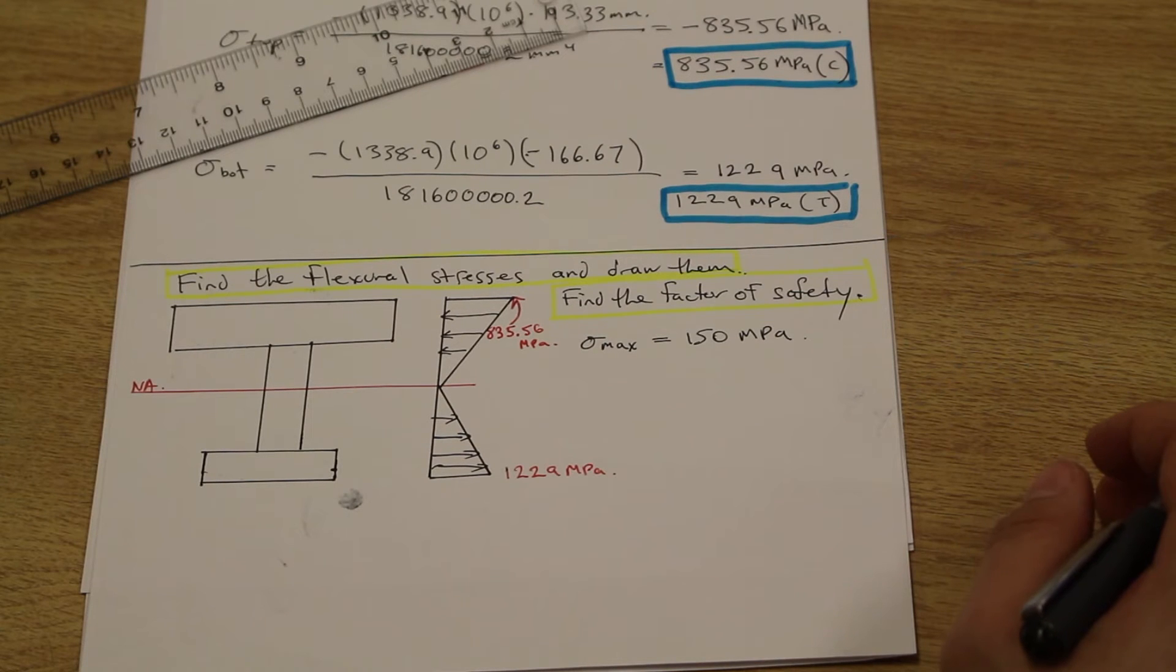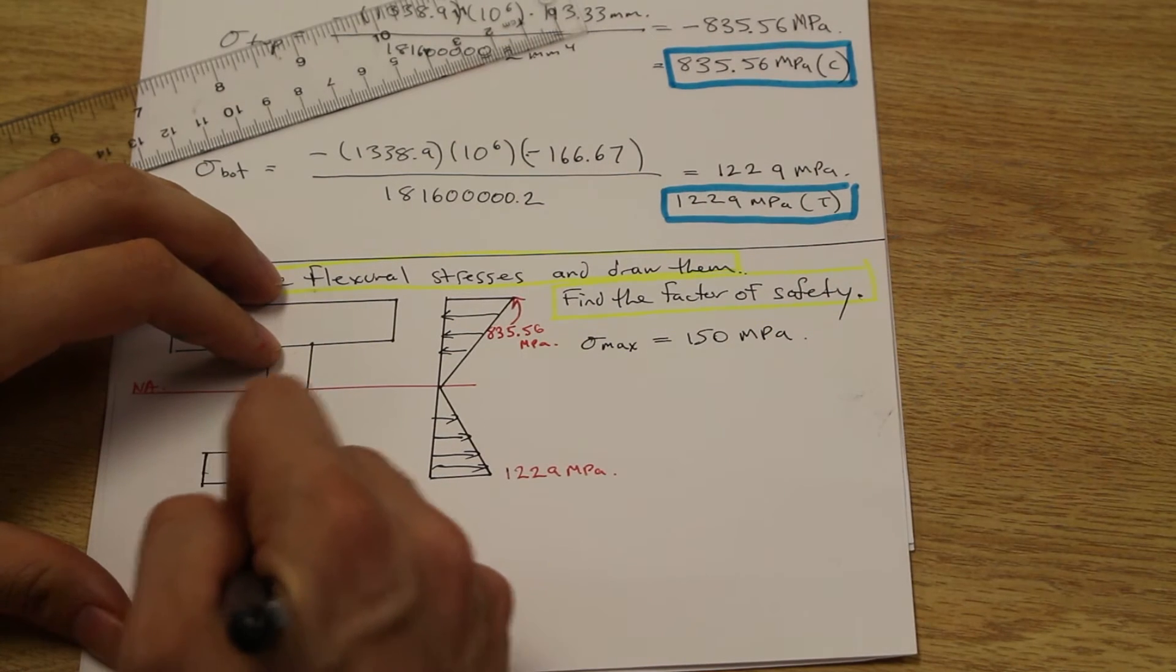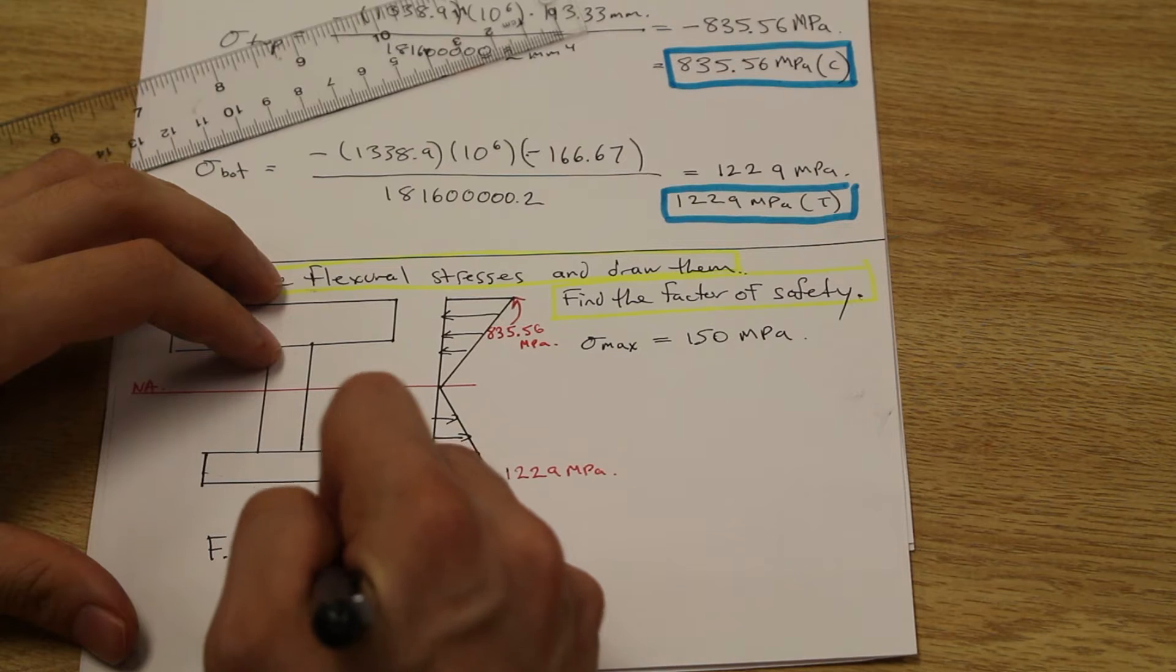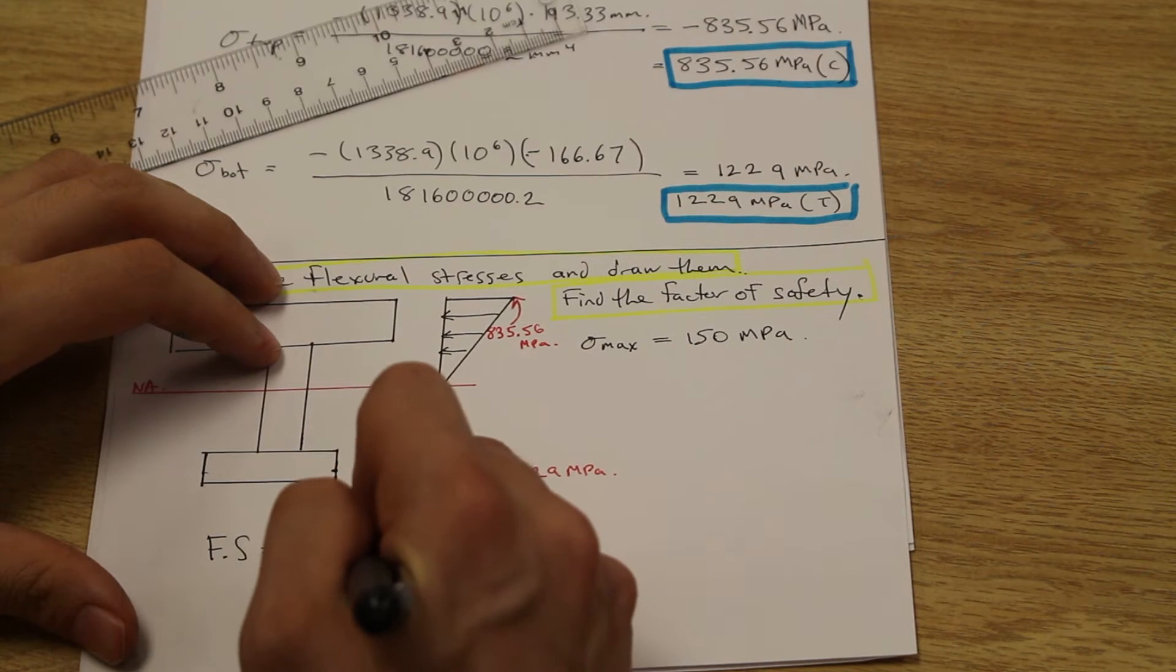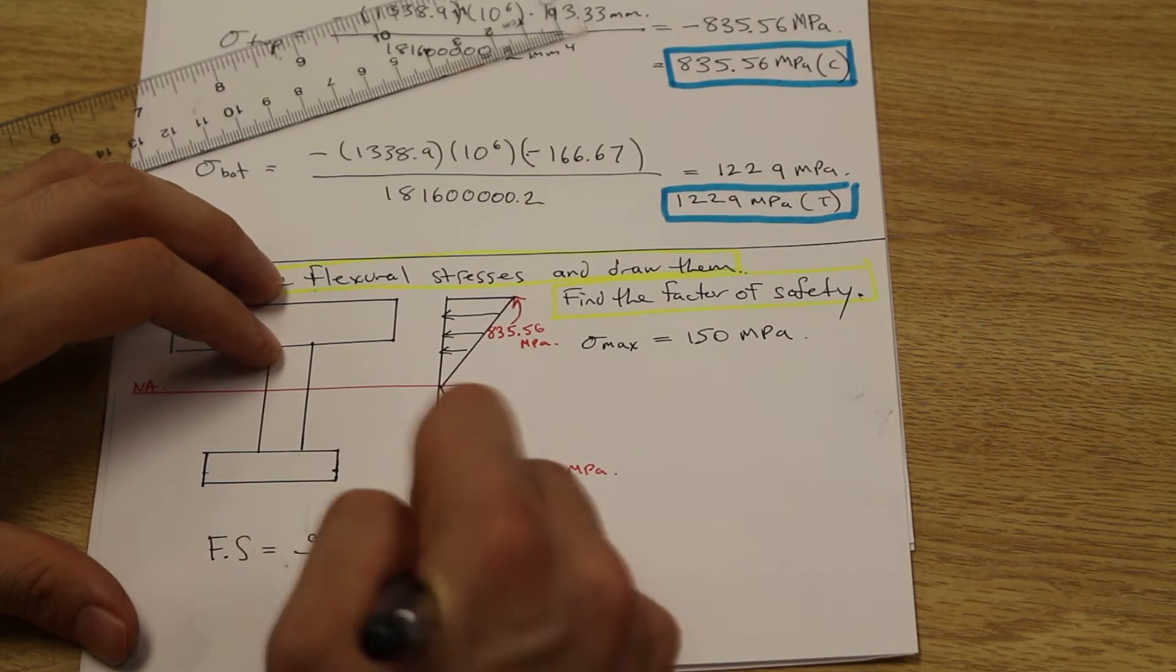And now the question asks us, finally, last part of the question, find the factor of safety. Now, we discussed this earlier. Obviously, the factor of safety is whatever we're measuring. Allowable over actual.